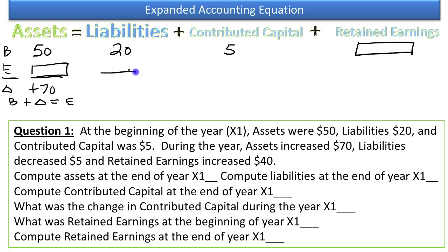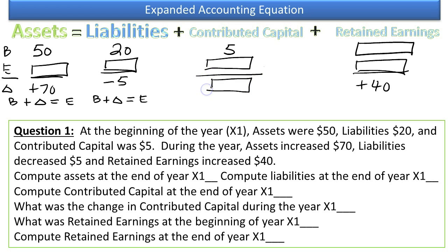Liabilities decreased by 5, so they went down by 5. So we had a beginning, we had the change, now this is actually going to be a minus 5, equals ending, and we don't know the ending. Retained earnings increased by 40. Now in this case, we don't know the beginning or the ending, so we'll have to use the expanded accounting equation working horizontally to solve for that. That's really all we've been given, so these others, we also don't know, ending contributed capital, and the change in contributed capital.